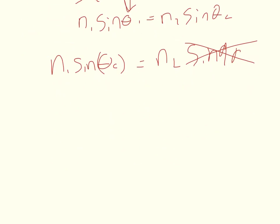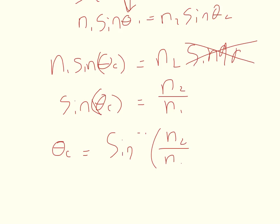So the sine of the critical angle is equal to n2 over n1. And then we take the inverse sine of both sides, so the critical angle is equal to the inverse sine of n2 over n1.